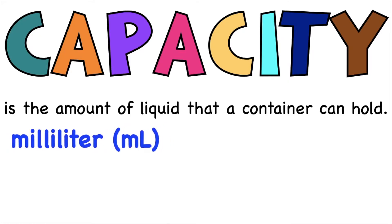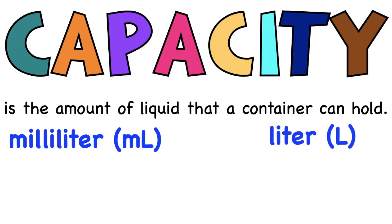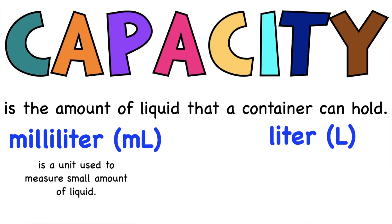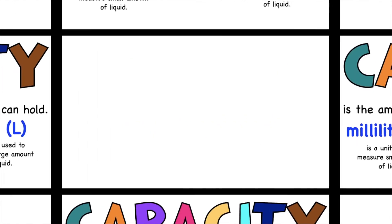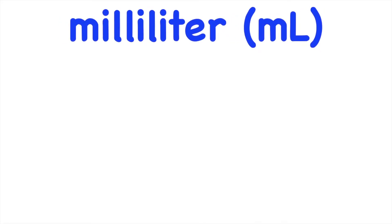Capacity is the amount of liquid that a container can hold. We have what you call the milliliter, or mL, and liter, or L. Milliliter is a unit used to measure small amounts of liquid, while liter is a unit used to measure large amounts of liquid.